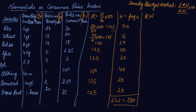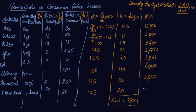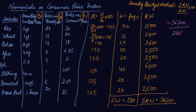Now we calculate R into W. Multiplying each R by its corresponding W gives values of 15,000; 2,000; 3,600; 2,500; 2,500; 2,500; 6,000; 2,500; and 2,500. Putting these into the formula: summation RW is 36,600 divided by summation W which is 280, into 100. We get an answer of 130.6 as the consumer price index.